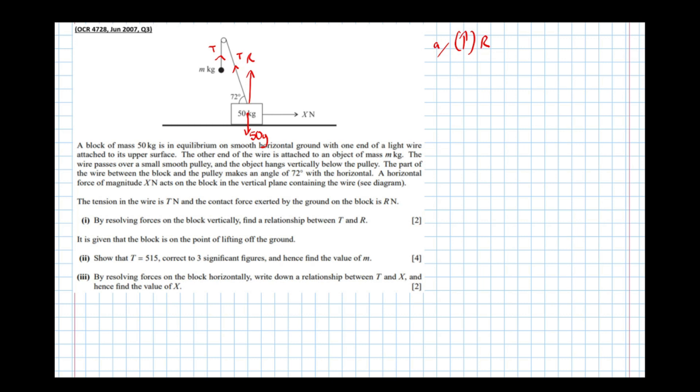So r going directly upwards, and t has a component going upwards, but not all of it's going upwards, some of it's pointing to the left as well. So what we're going to do is use this triangle here to try and split t up into its constituent parts. So the hypotenuse is t.